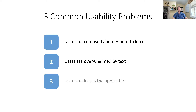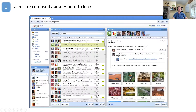The three most common issues we identified: first, users don't know where to look when they come to a gateway — they're confused about where to look. Second, users are overwhelmed by the amount of text on the gateway. Third, users feel lost in the system. The third one is crossed out because we're not covering it here for the sake of time, but it's in the paper if you're interested.